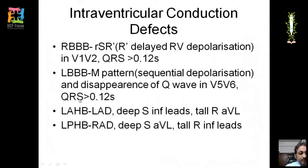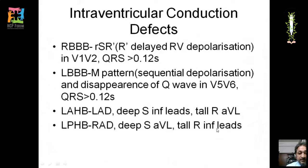In left anterior hemiblock, the impulse travels through the posterior fascicle toward the left, causing left axis deviation with tall R waves in lateral leads and deep S waves in inferior leads. In left posterior hemiblock, the opposite occurs: deep S waves in lateral leads and tall R waves in inferior leads, with right axis deviation, as the impulse travels through the anterior fascicle toward the inferior leads.